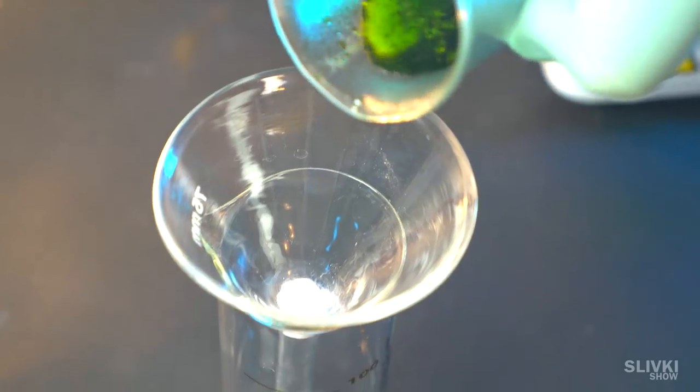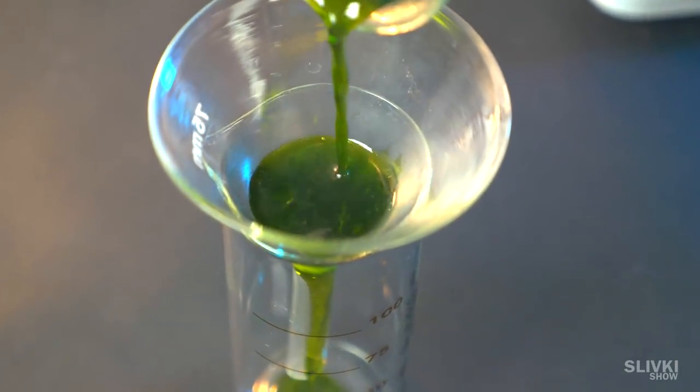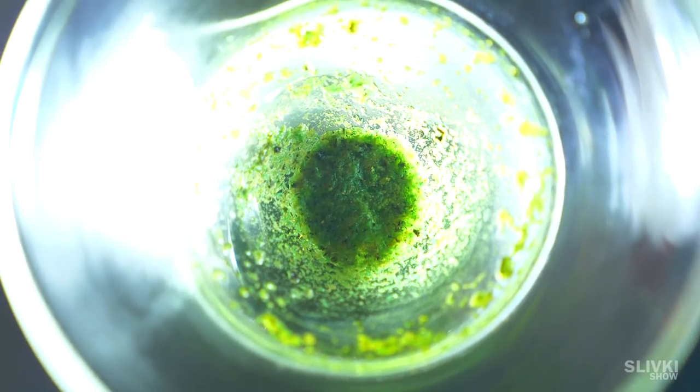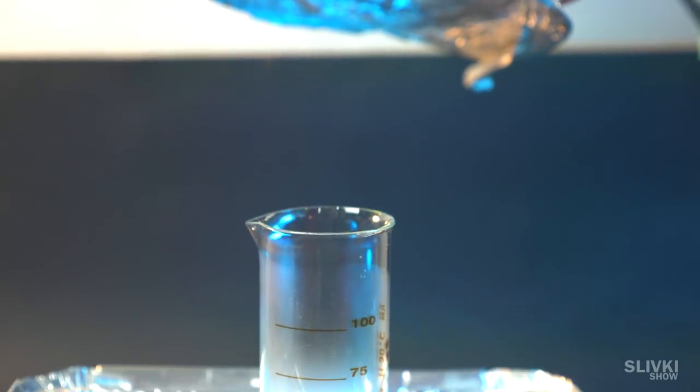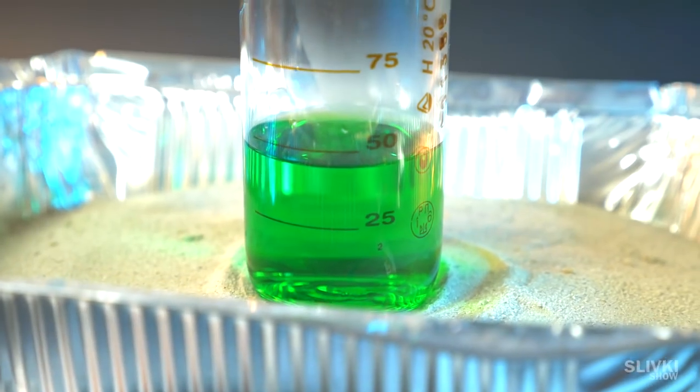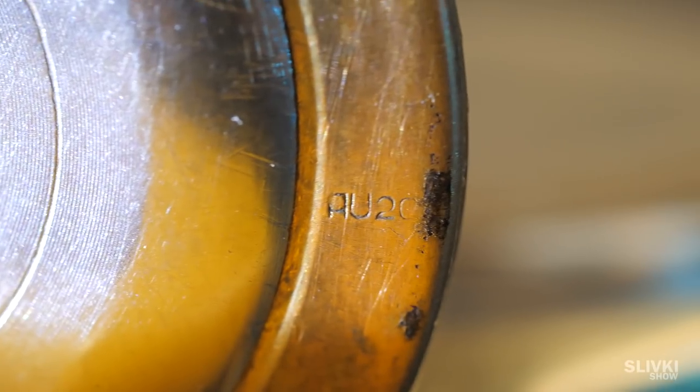In the end, filter all of this through with a funnel and cotton filter. All excess left on the cotton. Add distilled water to mixture and evaporate twice, like we did in the previous episode with watches.